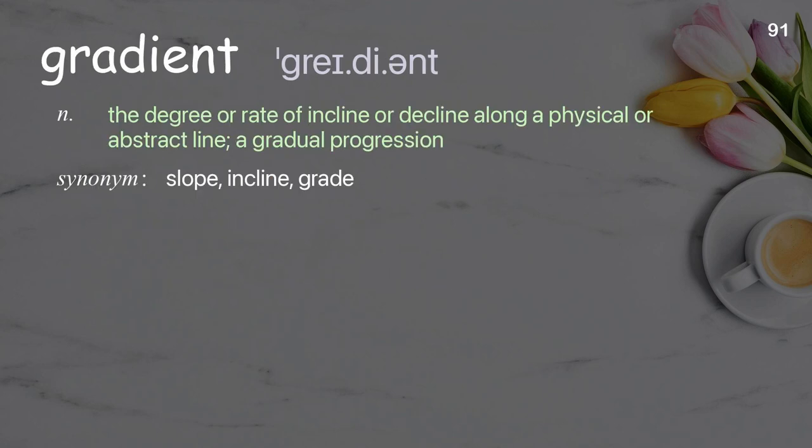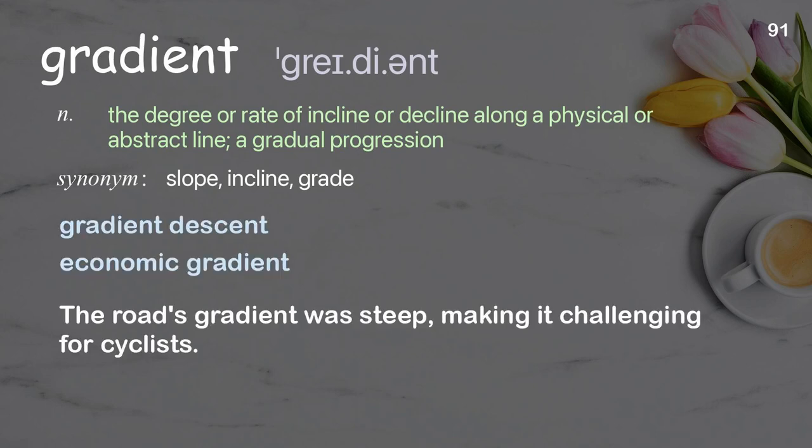Gradient. The degree or rate of incline or decline along a physical or abstract line; a gradual progression. Examples: gradient descent, economic gradient. The road's gradient was steep, making it challenging for cyclists.